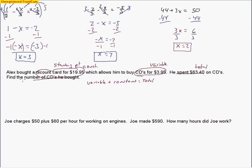So let's go ahead and try substituting some numbers in there. It says find the number of CDs bought. So we're going to say this is, oh, how about C for CDs? So we don't know how many CDs. So we're going to take our variable amount, $3.95 times the number of CDs plus the constant, $19.95, equals the total, $63.40.